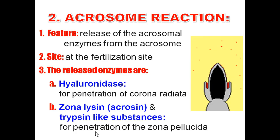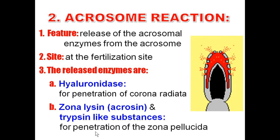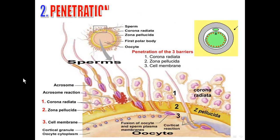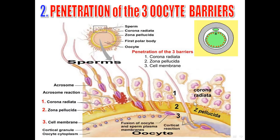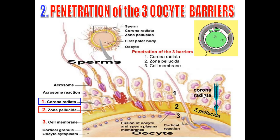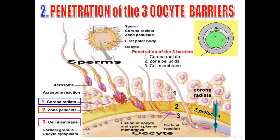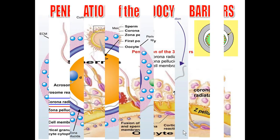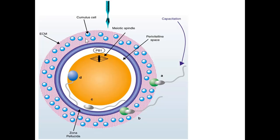The second process is penetration of the three oocyte barriers. First, penetration of the corona radiata by hyaluronidase. Then penetration of zona pellucida by zonalysine or acrosin and trypsin-like substances. Then penetration of the cell membrane. Once inside the ovum, the body and tail of the sperm degenerate, and the nucleus of the sperm enlarges to form the male pronucleus.